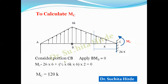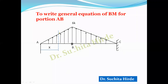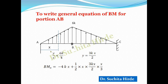With reactions known, we write the general bending moment equation for portion AB, taking origin at A. The relationship between load ordinate y and distance x is y/x = 6K/4, so y = (3/2)Kx. The bending moment at any distance x is: Mx = −4Kx + (½ × x × y) × (x/3) = −4Kx + Kx³/4.